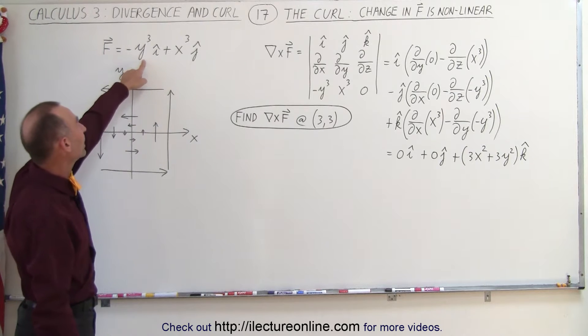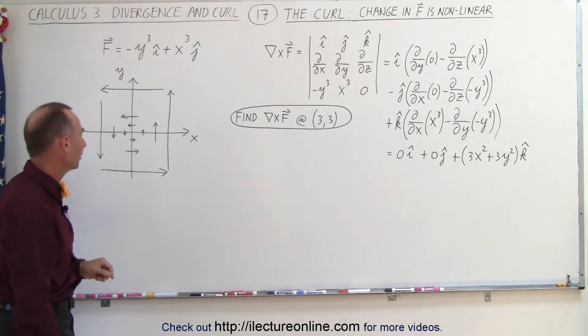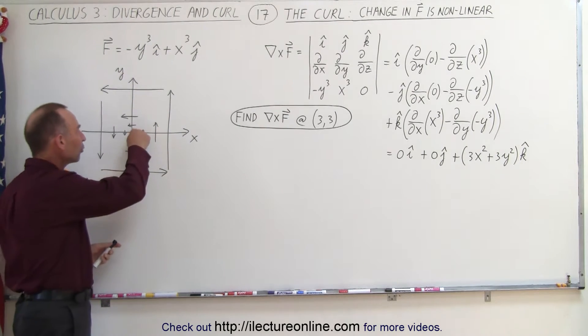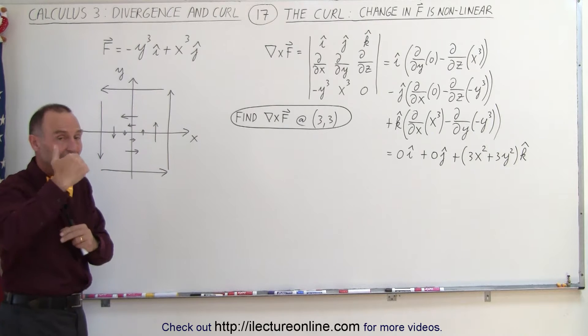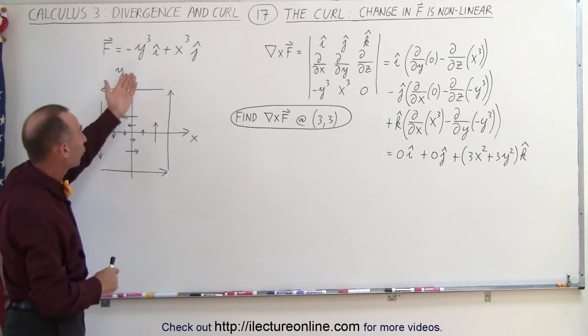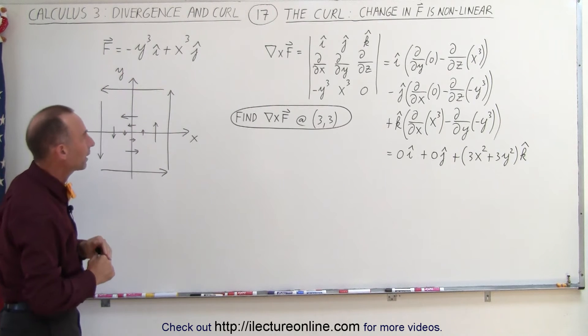You can see here that it depends on x and y to the third power, which means that very close to the origin, the magnitude of the vector field is very small, but then as you go farther away, the increase increases very rapidly according to y-cubed and x-cubed.